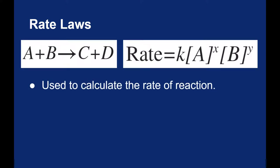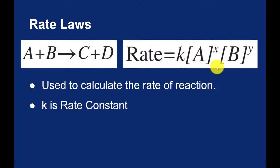If we are going to calculate the rate of reaction, we would take K, which is a rate constant — hopefully by now we recognize that the letter K refers to a constant — and multiply it by the concentrations of each reactant. The square brackets refer to measuring the concentration of A and the concentration of B, which we generally measure in molarity.